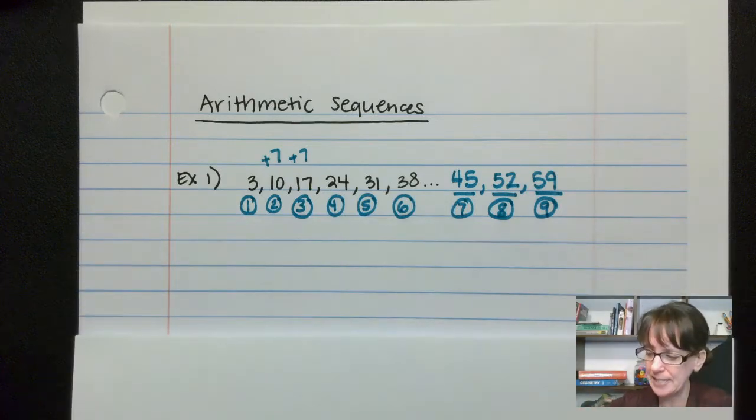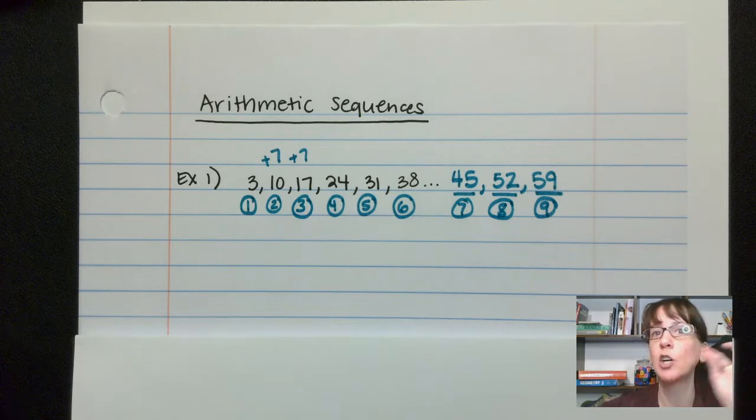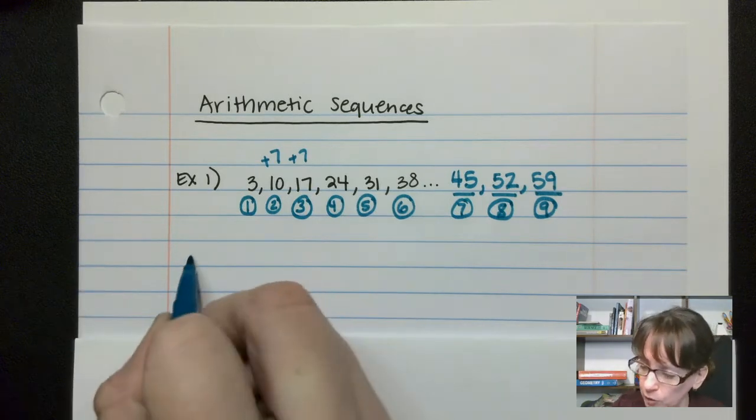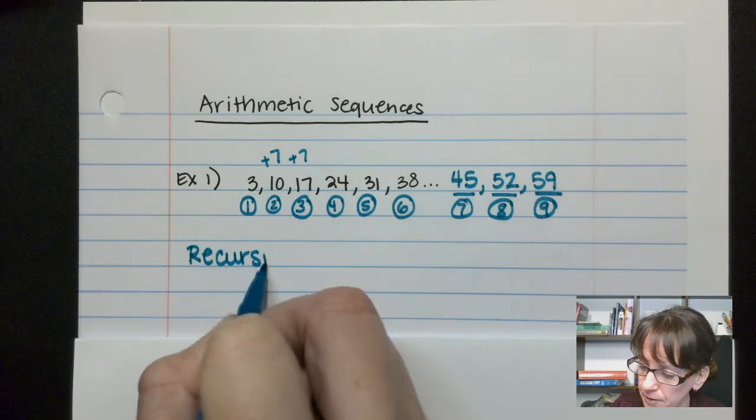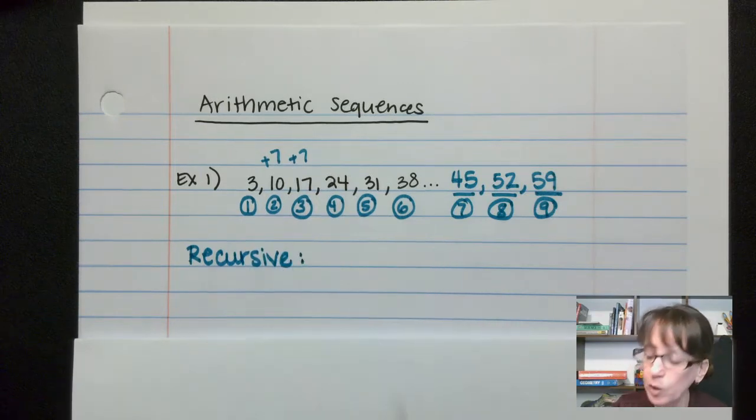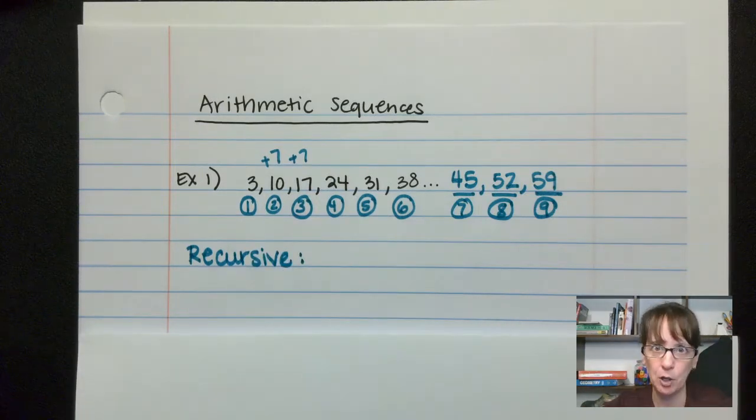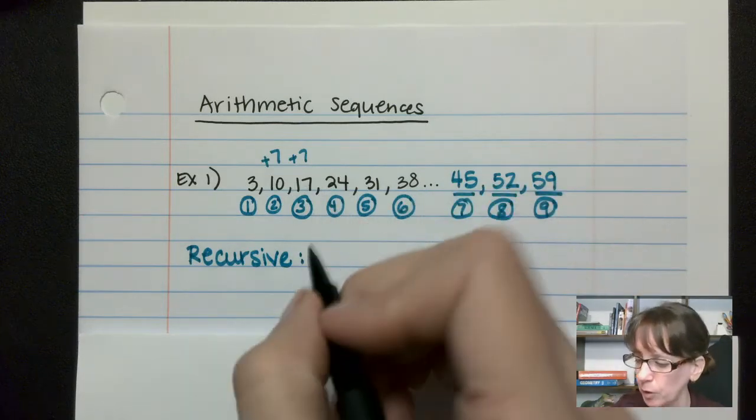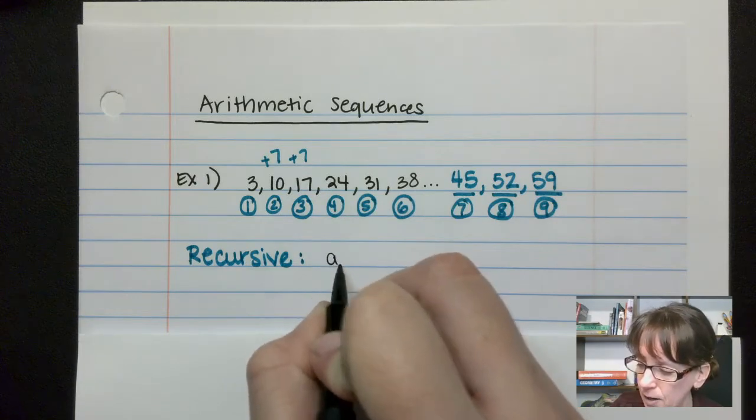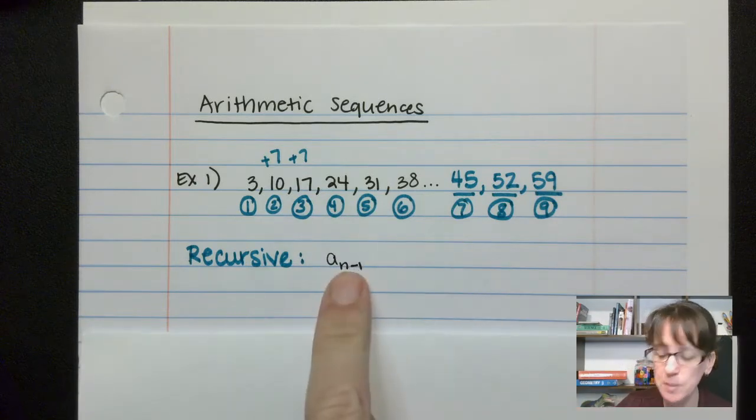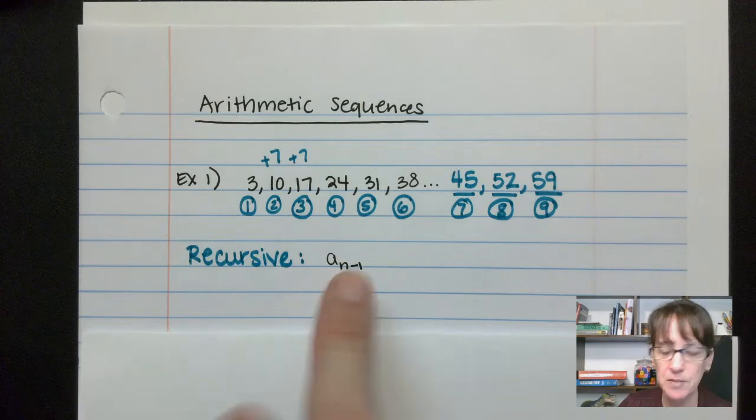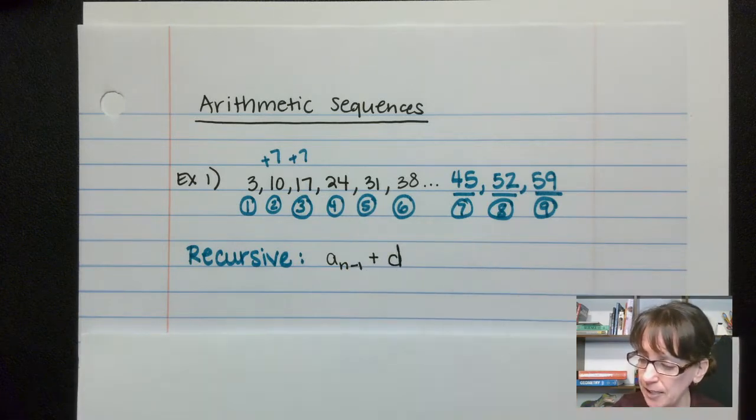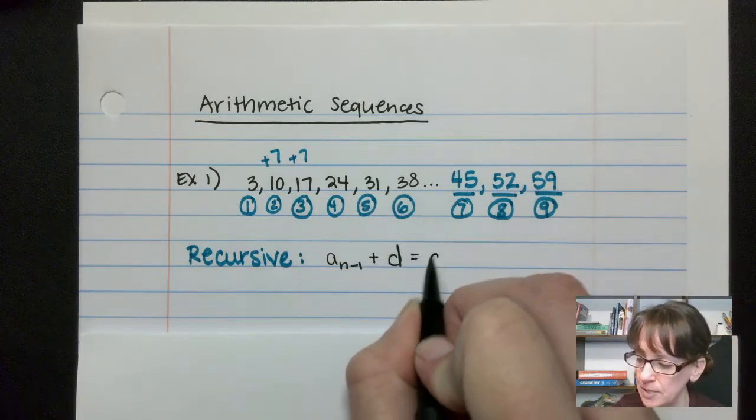So when we go to write that down, that is called a recursive sequence. A recursive sequence requires the previous number in order to get the new number. So the formula, the generic formula for a recursive is: whatever happened in the previous position, that's what this is, the answer for the previous position, we're going to add our difference to it, and that's going to give us our new position.